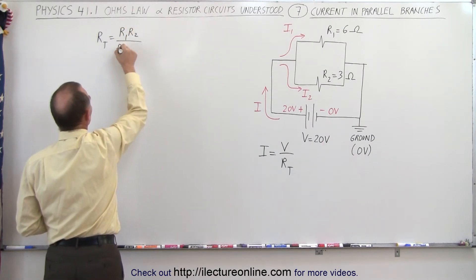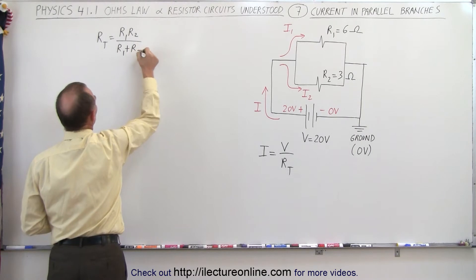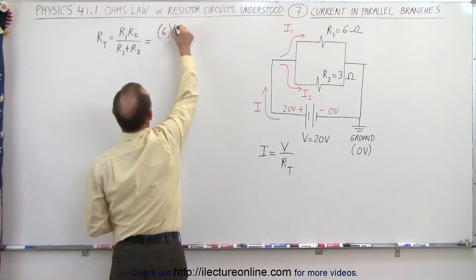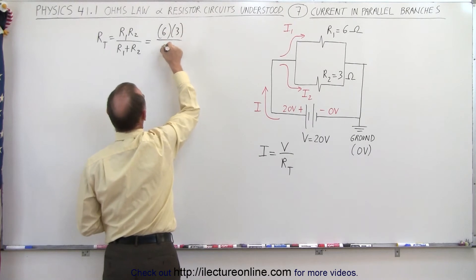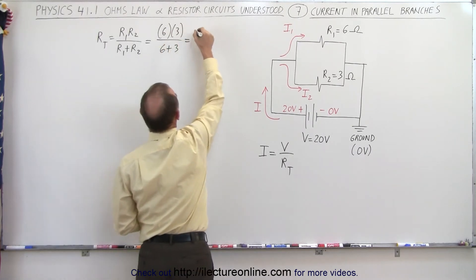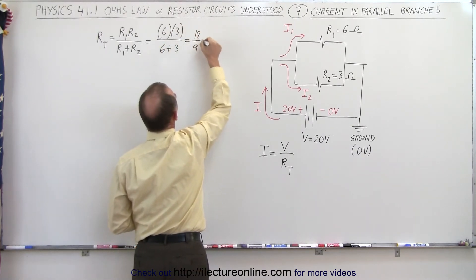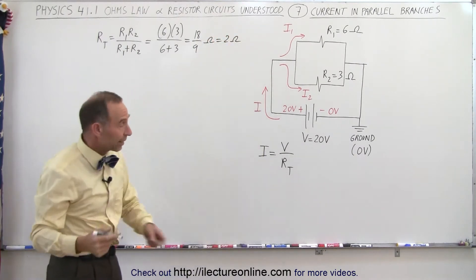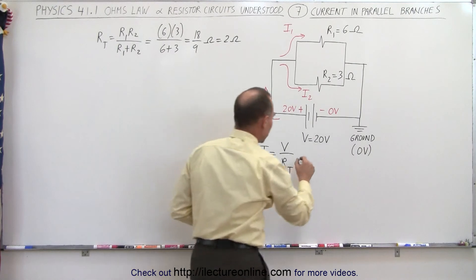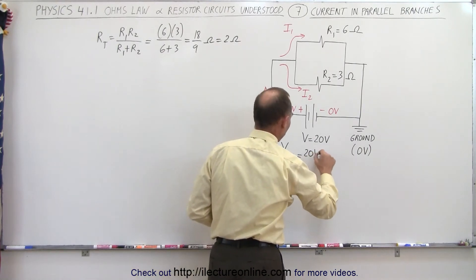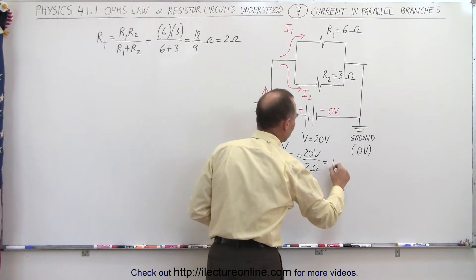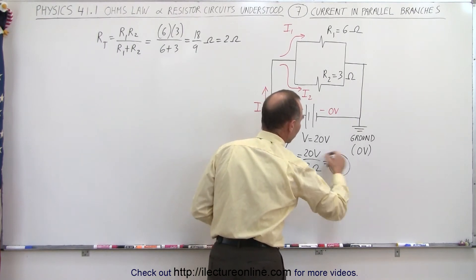R total equals R1 times R2 divided by R1 plus R2. In this case that would be 6 ohms times 3 ohms divided by 6 ohms plus 3 ohms, which is 18 divided by 9 ohms, which equals 2 ohms. From that we can calculate the total current, which will be 20 volts divided by 2 ohms of total equivalent resistance, which is 10 amps of current.